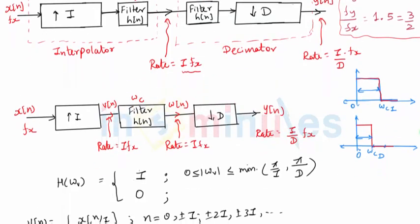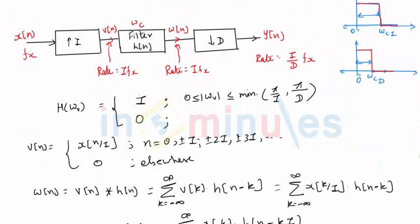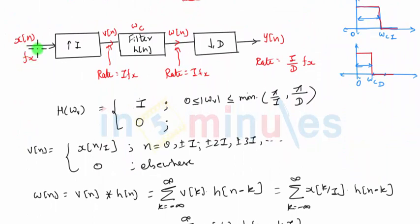This is the block diagram. The output of interpolator is V of n. We will first write down W, output taken after filter is W. So we will first write down W in the form of X. The rate at the input of the filter is I F_X. The rate at the output of the filter will also be I F_X, because filter is not converting sampling rate. The sampling rate conversion takes place only in interpolator and decimator blocks.